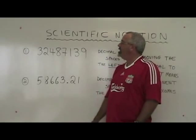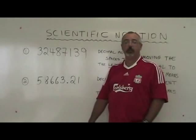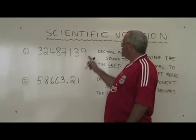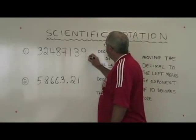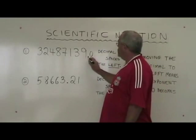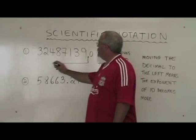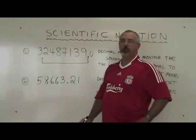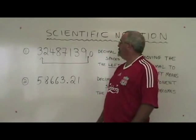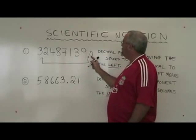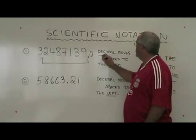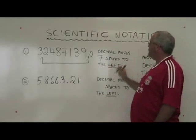In example one, we're going to convert this number to scientific notation. We have to know where the decimal is with this number, and of course it will be here at the end. So I can write a decimal zero to show that. We have to move that decimal over here, so that there is only one non-zero digit to the left of the new position of the decimal. This means we're moving our decimal seven spaces to the left.